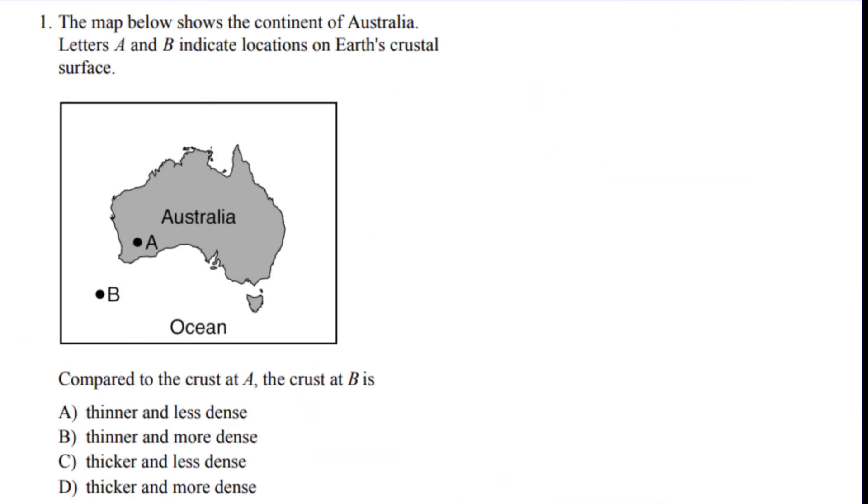So that was a really fast crash course on plate tectonics. So here's where we do our practice questions. So if you want, feel free to pause, answer, and then I'll go over the answer. Number one, the map below shows the continent of Australia. Letters A and B indicate locations on the Earth's crustal surface. Compared to the crust at A, the crust at B would be, well, the first thing is the A crust is continental and the B crust is oceanic. So I know that the oceanic crust is thinner and more dense. You're going to have to remember that. Continental is thicker and less dense. So crust at B would be thinner and more dense. So the answer was B.